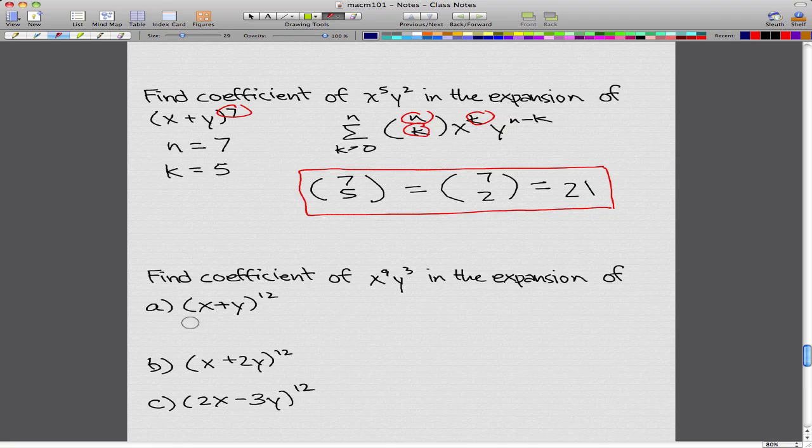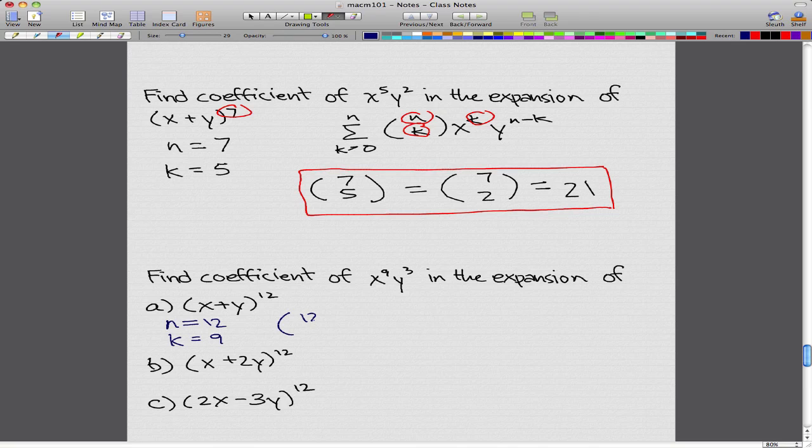So n equals 12, k equals 9. All we have to do is 12 choose 9, and that's our coefficient for (x+y)^12 when we're looking for x^9y^3.